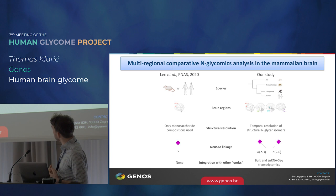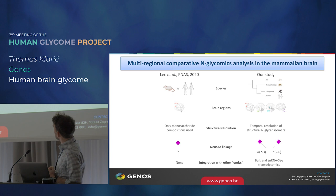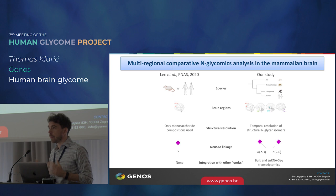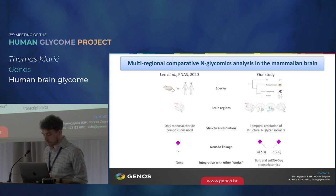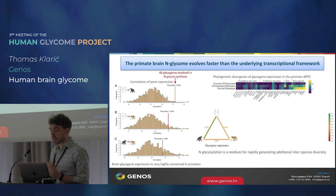Regarding structural resolution, while the prior study reported only monosaccharide compositions — and we know how ambiguous that can be — we've tried to go into a lot more detail about structurally defining the glycans we discovered, including doing linkage-specific derivatization of sialic acid to get information about sialic acid linkage. Finally, we integrated our glycomics dataset with complementary transcriptomics, both at the bulk tissue level and single nucleus RNA-seq level, to look at the interaction between glycogene expression and the brain N-glycome phenotype.